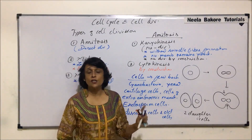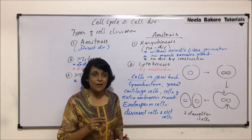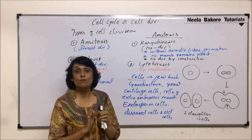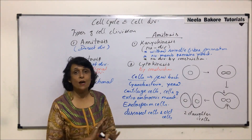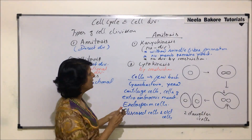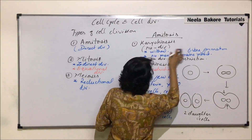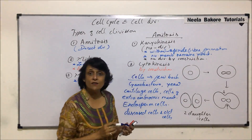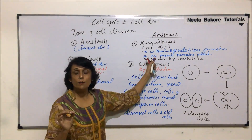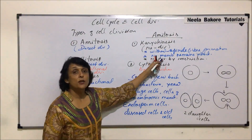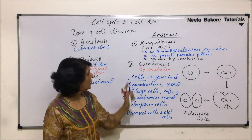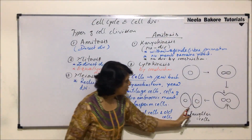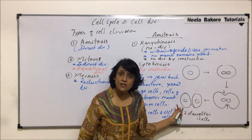So these are the cells in which this division can be seen. The division is completed in two steps: karyokinesis and cytokinesis. Karyokinesis is splitting of the nucleus without any spindle fiber formation. The nuclear membrane remains as it is. The nucleus divides by simple constriction and then the cytoplasm also undergoes constriction, as shown in this diagram.